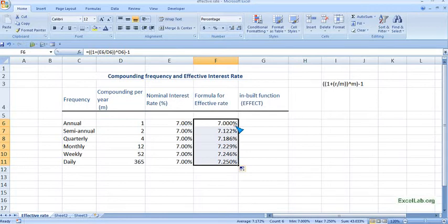Annual is seven percent, but when it is semi-annual it is seven point one two two. If it is quarterly, it is seven point one eight six. If it is monthly, it is seven point two two nine. You can see it is increasing—as the compounding frequency increases, the effective rate also increases.